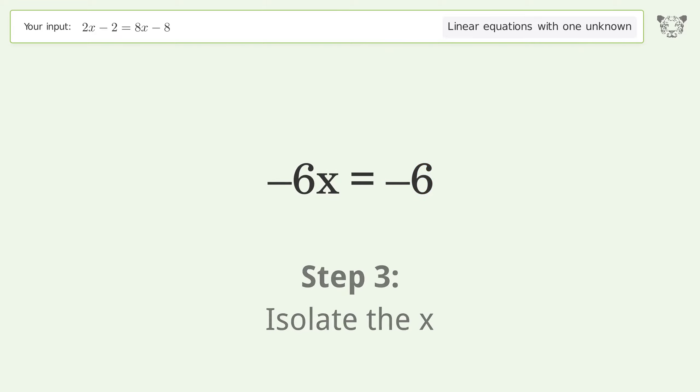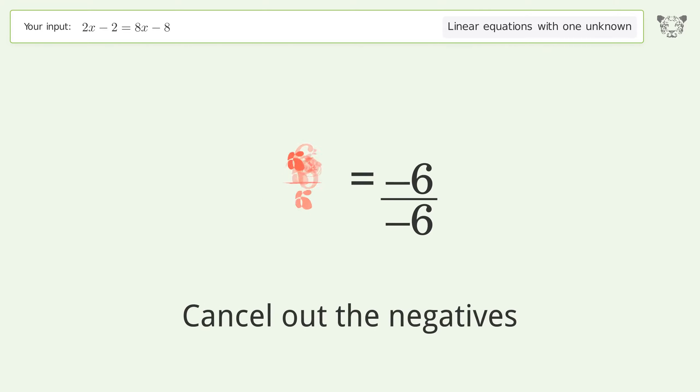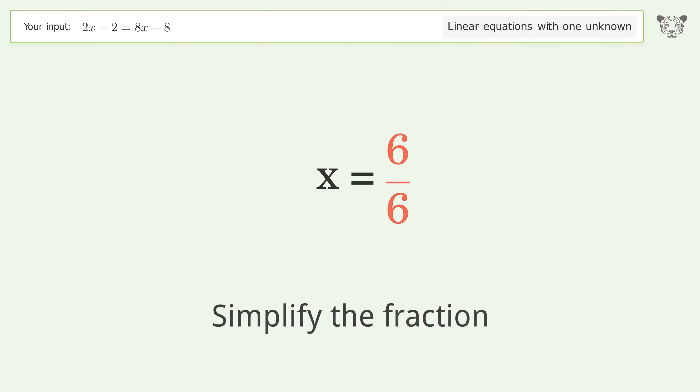Isolate the x. Divide both sides by negative 6. Cancel out the negatives. Simplify the fraction. Cancel out the negatives. Simplify the fraction.